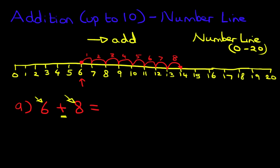What number did we land on? We landed on number 14. 6 plus 8 is 14. That is correct. And using the number line is really as simple as that.